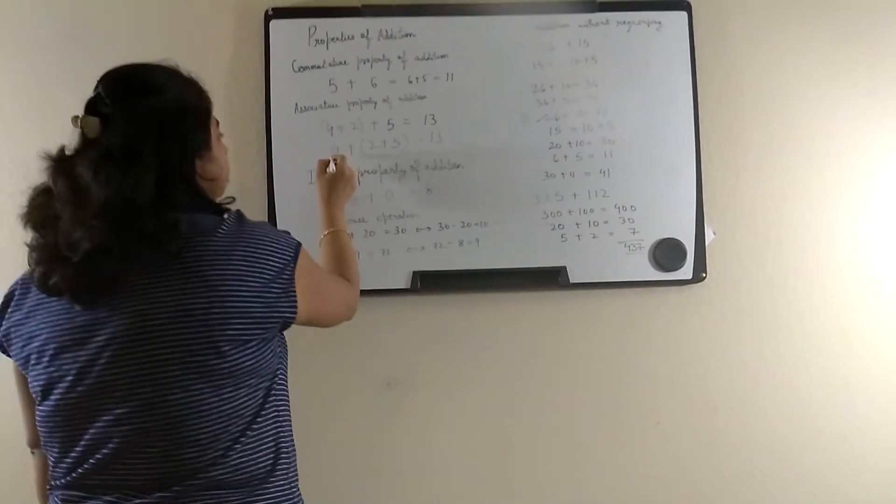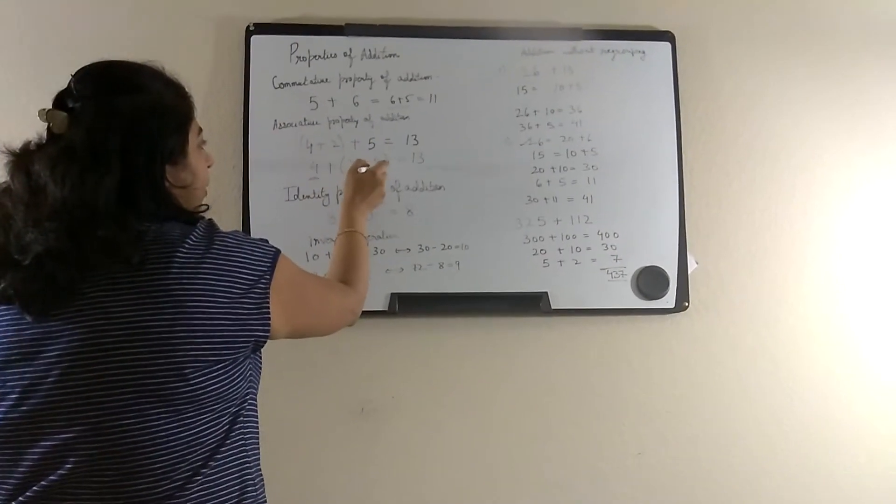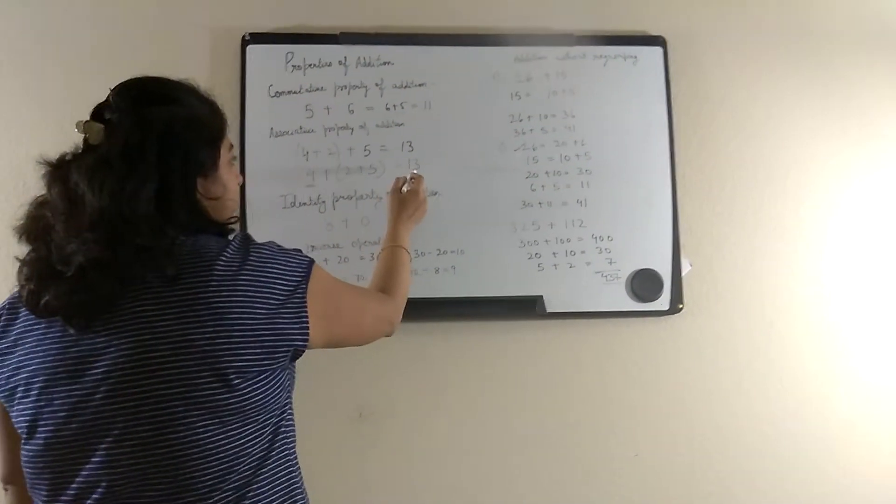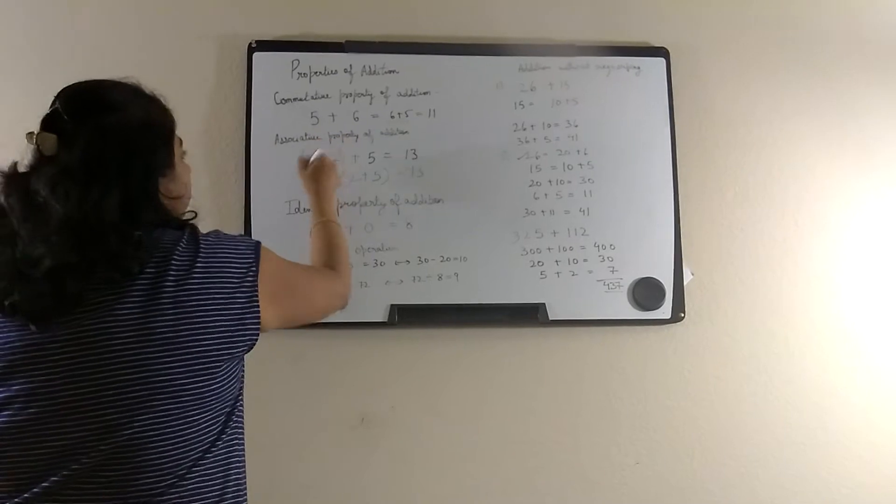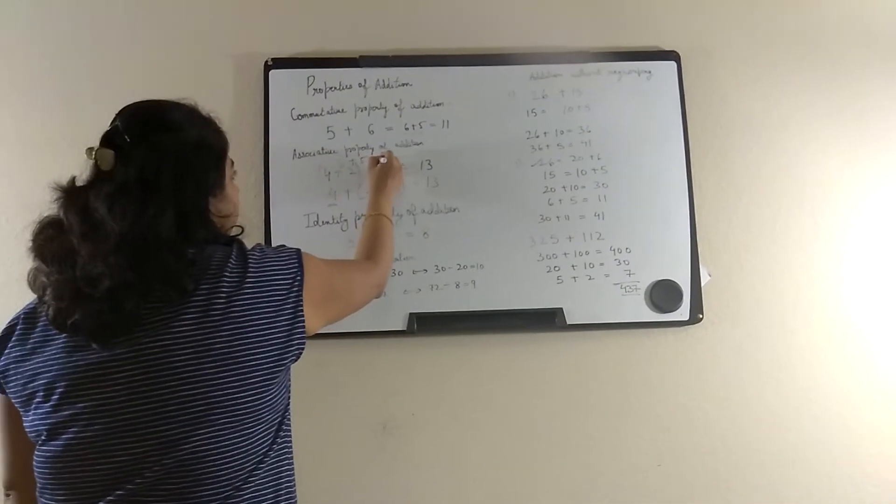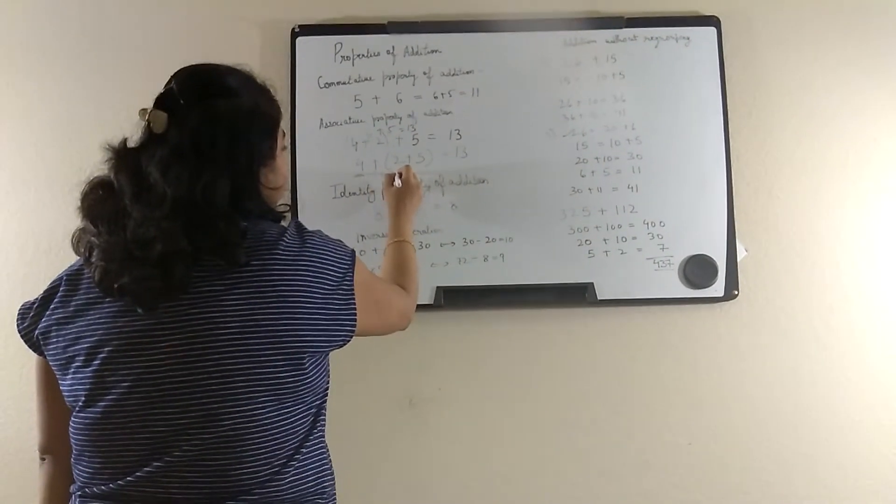Now in this, we have changed the position. 2 is in the bracket and 4 is outside the bracket, but still the sum remains the same. If we solve it, it is 6 plus 5 which is also 11. It is 4 plus 7, it is also 11.